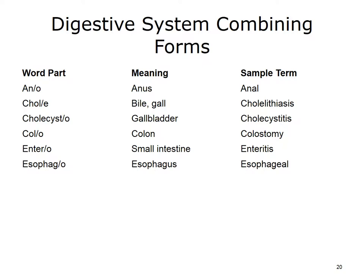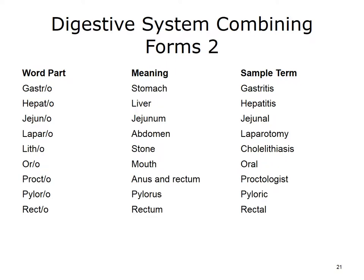Here are some key word parts for the digestive system, along with their meanings. In the third column, you can see some of the medical terms that we can create by combining word parts. You should return to the online medical dictionary to hear the pronunciation and become familiar with the meaning of the created terms. Here are some additional key word parts for the digestive system as well.